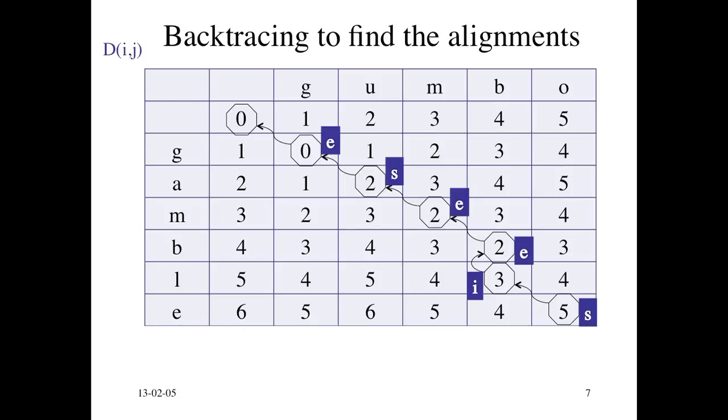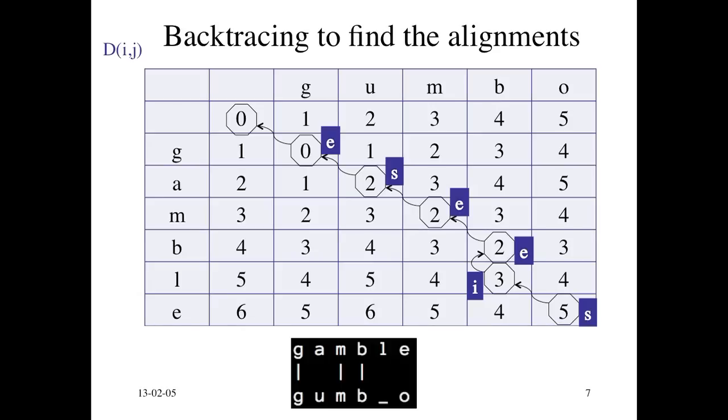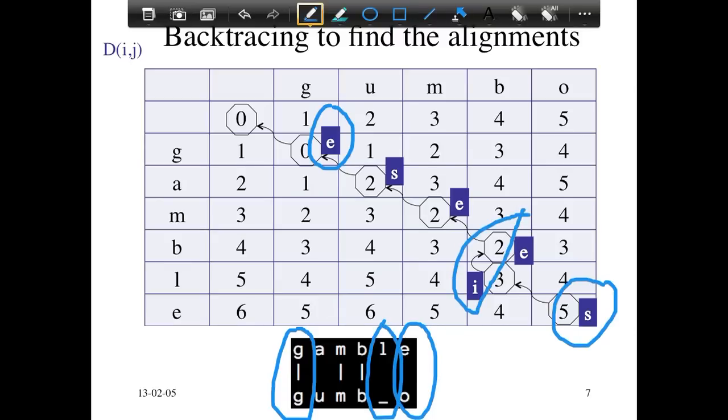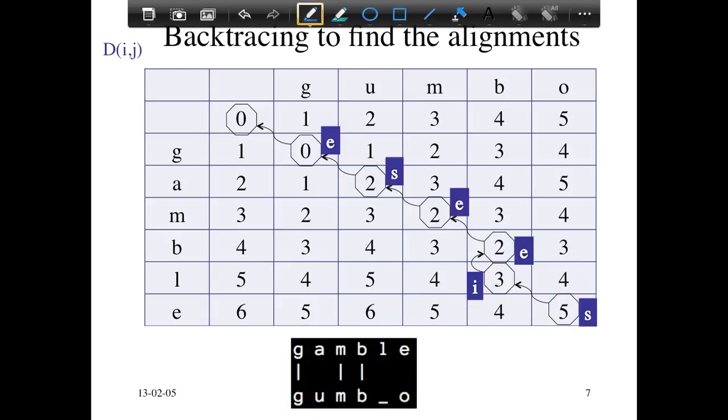So if you see this sequence of edits that we have from backtracing this matrix that we built for computing the minimum edit distance, we actually get the alignment that we want. So if you look at this, the G aligned with G is because this is equal, the E aligned with O is because this was a substitution. And the L being inserted is because of this insertion step here. So you can see that the alignment we can get from the edit distance matrix can be used directly to get this nice pretty alignment picture, which is what we want.